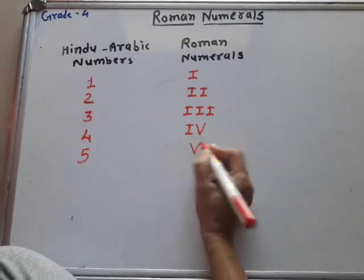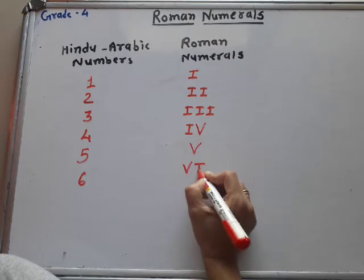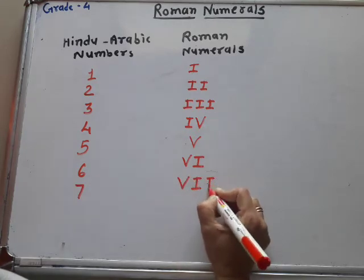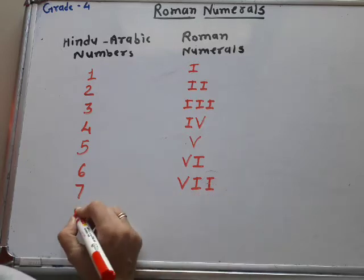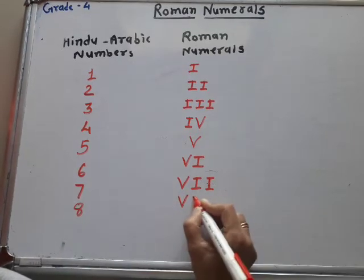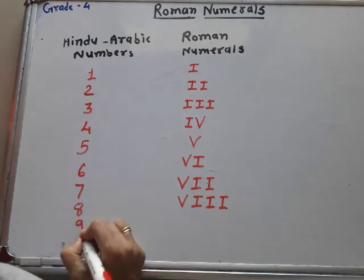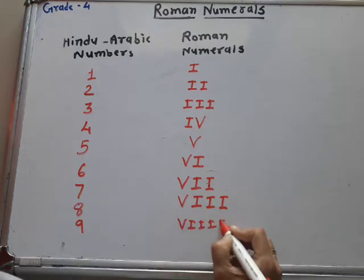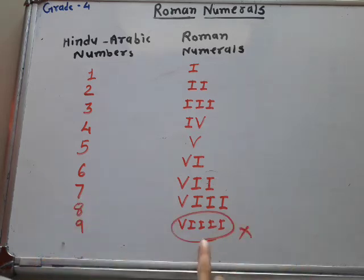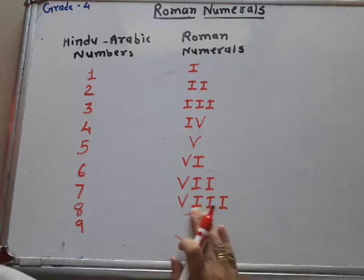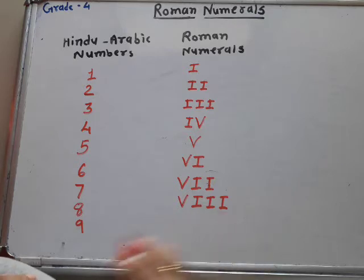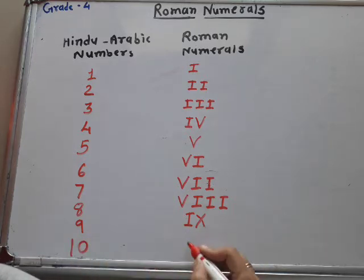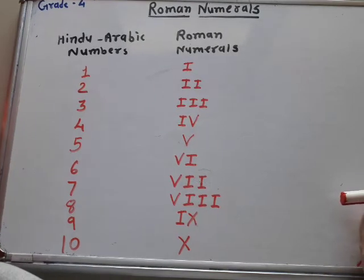5 is V. 6 is VI (5 plus 1). 7 is VII (5, 6, 7). 8 is VIII (5, 6, 7, 8). For 9, writing VIIII would be wrong as we cannot repeat I four times. Instead, we subtract: 10 minus 1 equals 9, so we write I to the left of X — IX equals 9. And 10 is simply X. That covers numbers 1 to 10.